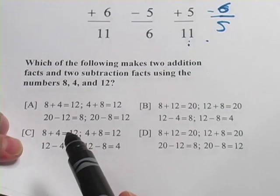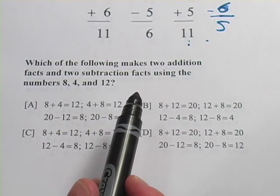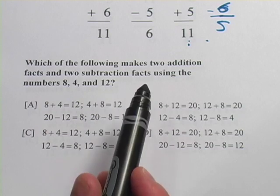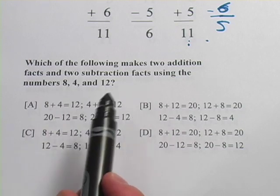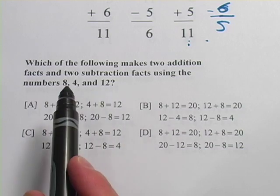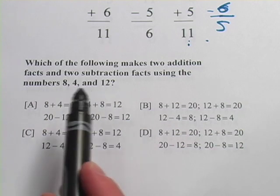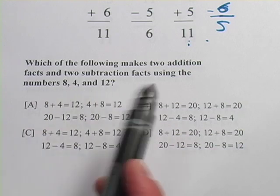All right, one more. This one says, which of the following makes two addition facts and two subtraction facts using the numbers 8, 4, and 12? So we're looking for the fact family here for 8, 4, and 12. So if we see some other number other than 8, 4, and 12, we know it's not right.